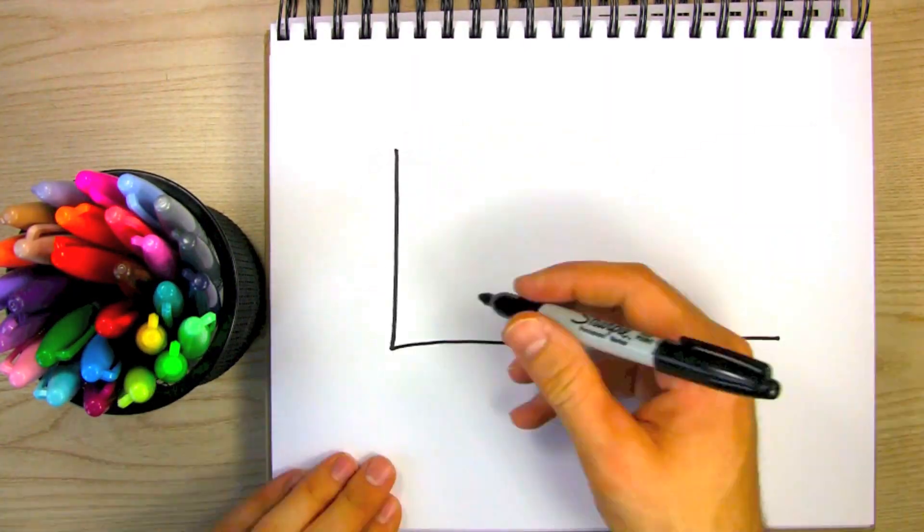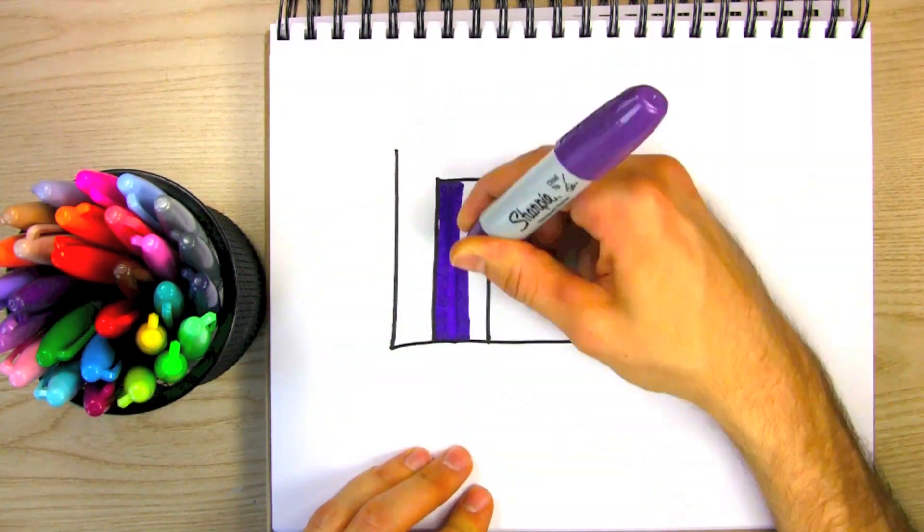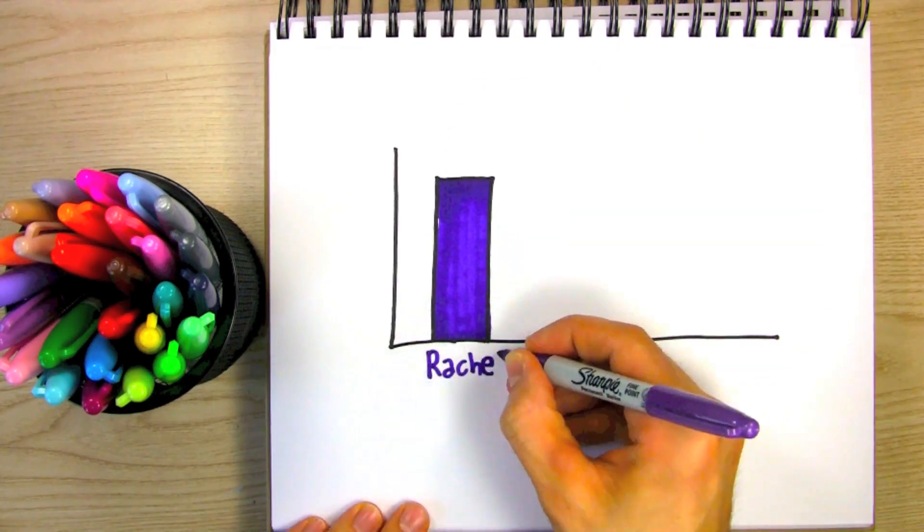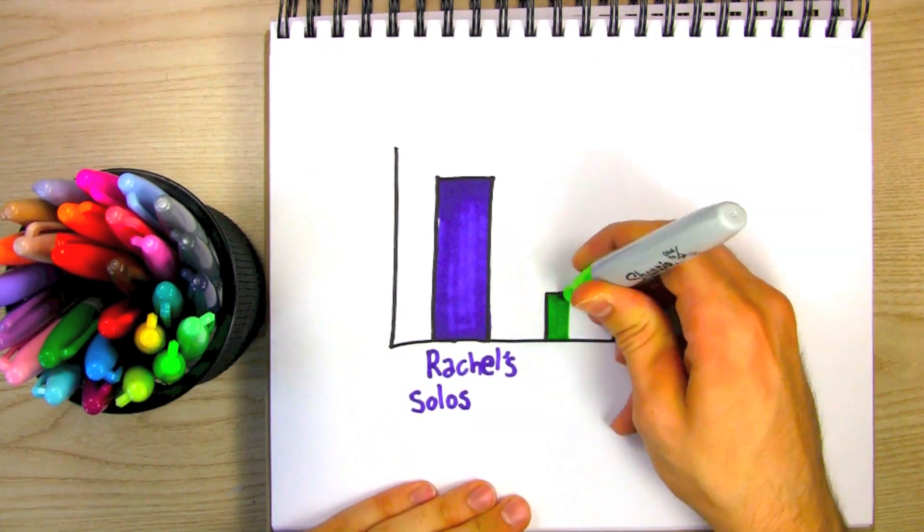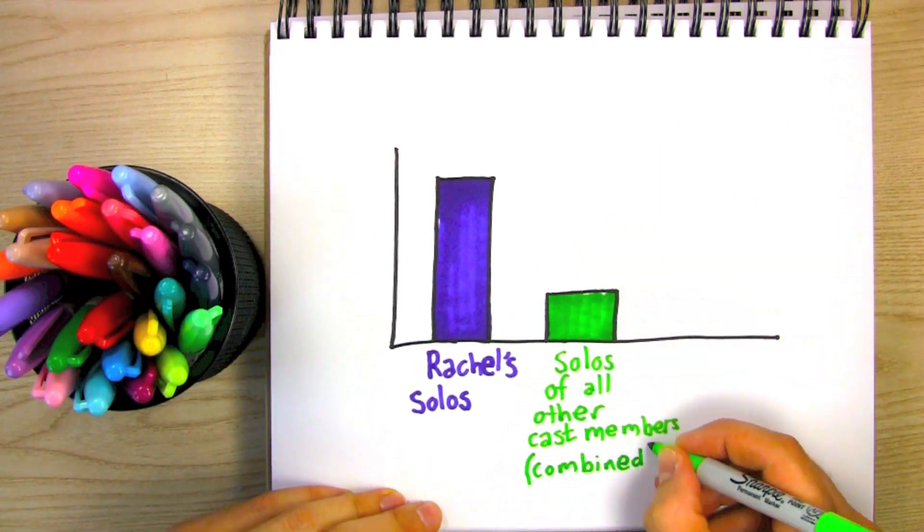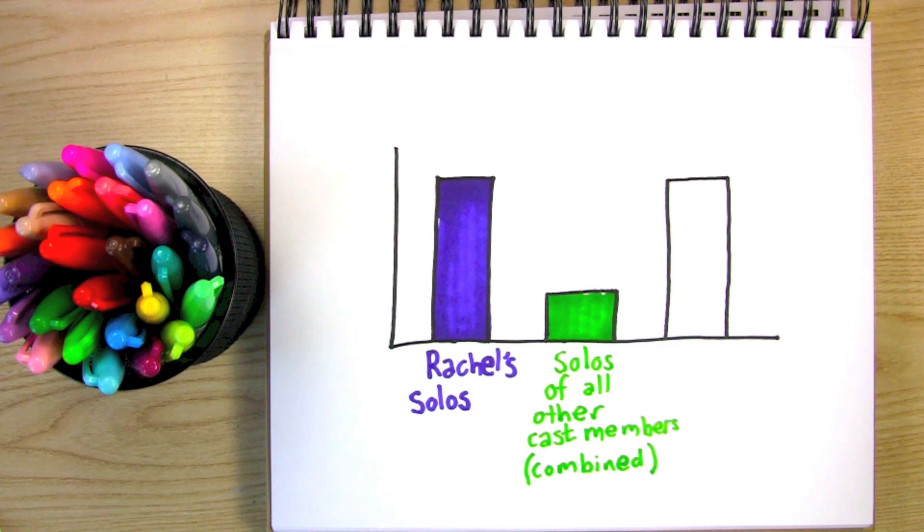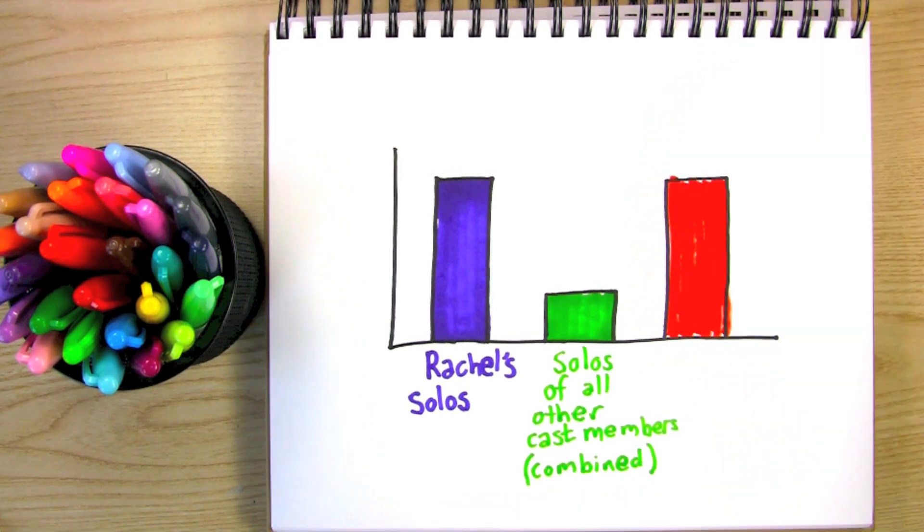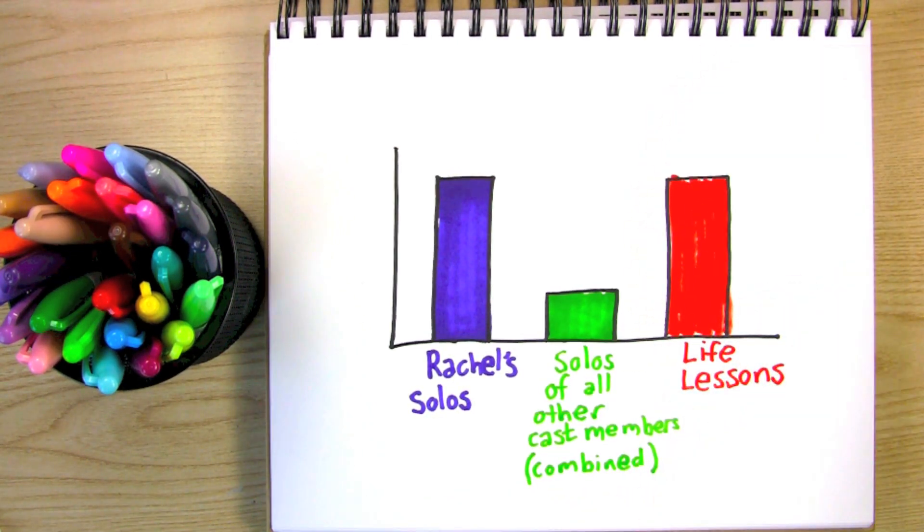Speaking of which, here's a histogram showing the number of solos Rachel has had on the show. A number higher than all other cast members combined. A number so high, it is rivaled only by the number of times the gang has learned an important life lesson about self-acceptance and or homophobia.